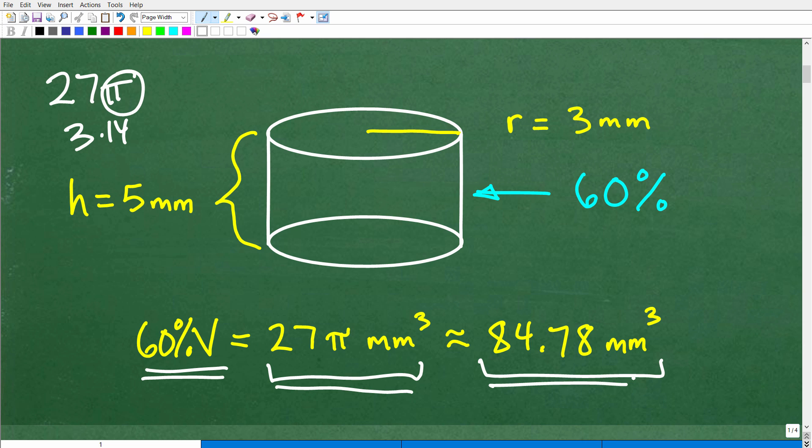But I bet you a lot of you forgot to add in your units of measure. This is a big no-no in mathematics and in science. If you just put 27π and you forgot your units of measure, you will get points taken off from most science teachers, most math teachers. So don't forget, units of measure for volume is what? Cubed, okay? So because our height is in millimeters and our radius here is in millimeters.